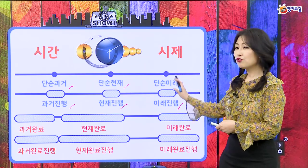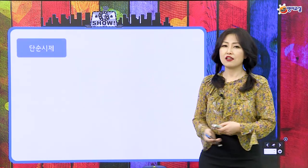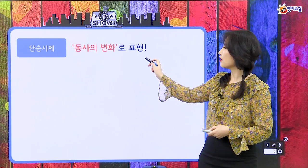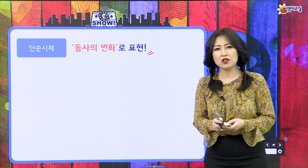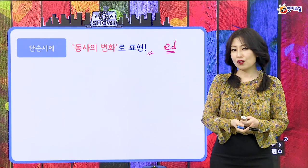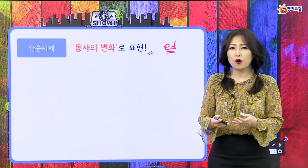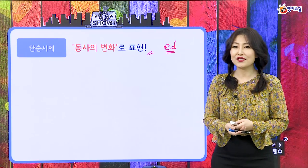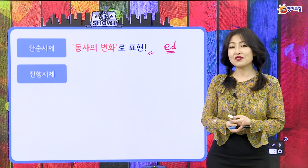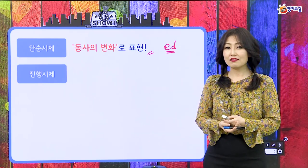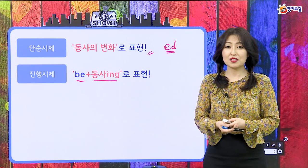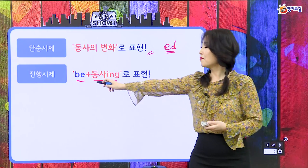12시제를 확인했으니까, 단순 시제는 동사가 혼자 다 책임지고 있었잖아요. 동사의 변화로 표현한다고 했어요. 보통은 ed만 붙여서 과거형을 만들었었고, 모양이 다 바뀌는 아이들도 있었어요. go, went, gone 이런 식으로요. 진행 시제의 기본은 be동사 쓰고 동사에 ing를 붙여서 표현했어요. 그래서 지금 이렇게 서서 이야기하는 건 I am speaking이 되는 거죠.